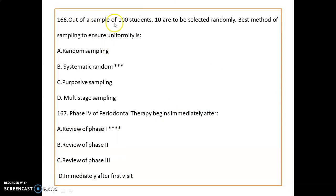Out of a sample of 100 students, 10 are to be selected randomly. What is the best method of sampling to ensure uniformity? It is systematic random sampling.